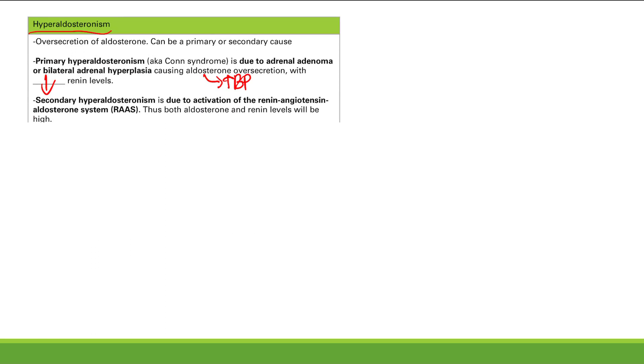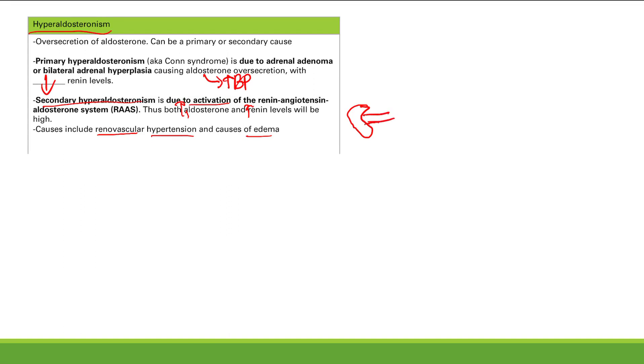Next is hyperaldosteronism — excess aldosterone. Primary causes include an adrenal adenoma or bilateral adrenal hyperplasia, causing aldosterone oversecretion. This raises blood pressure, and since the kidneys sense high blood pressure, renin levels are low. Secondary hyperaldosteronism results from activation of the RAAS — causes include renal vascular hypertension, where a blockage reduces blood flow to the kidney, making it sense low pressure even if systemic pressure is normal.